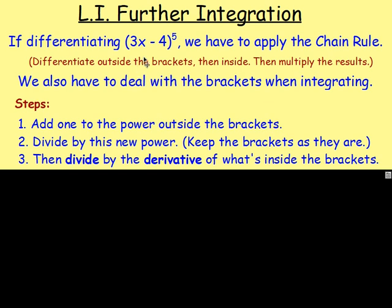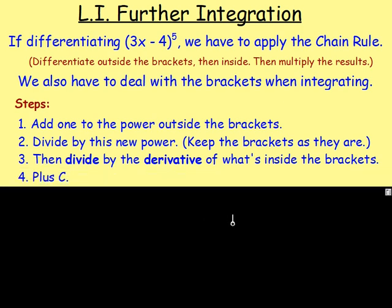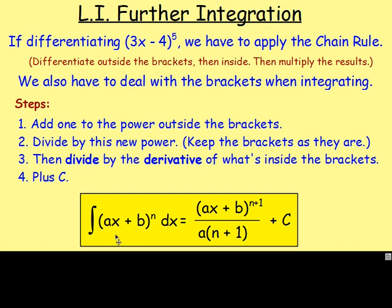So you would divide by the 3, giving you (3x − 4)^6 divide by 6. You'd also bring that 3 down, so you'd have 6 times 3 on the bottom. When you are integrating and you do not have your limits, you need to include your plus c. So if you're integrating (ax + b)^n with respect to x, you add 1 to the power, giving (ax + b)^(n+1), divide by (n+1), and also divide by the derivative of what's inside the brackets. If you differentiate ax + b, you just get a, so you divide by that. Don't forget your plus c.